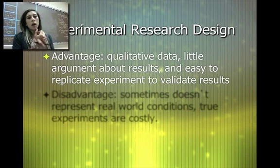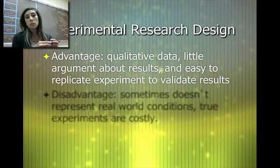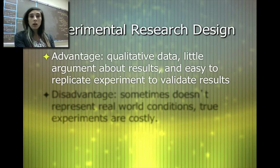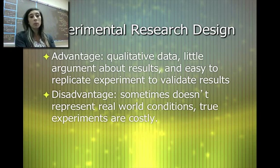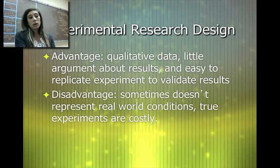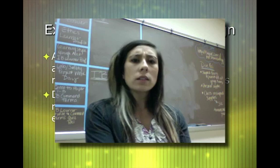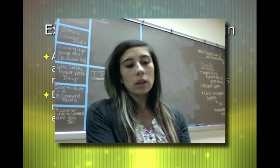A couple of advantages of experimental research design: quantitative data gives us much more accurate and precise information, and there's little argument about the results because they're very objective. It's straightforward because you've done an experiment — there's no room for opinion. It's easy to replicate and validate results. A disadvantage is that sometimes experiments don't represent the real world because we can't do them on a grand scale, and real experiments can be very costly with expensive equipment and precise instruments.